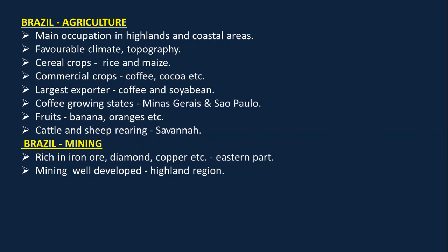The largest export of Brazil is coffee and soya bean. The major coffee growing states are Minas Gerais — this is asked at least eight times out of ten in map marking or in short-answer questions about commercial crops or major crops of Brazil. Fruits grown in Brazil are bananas, oranges, etc. Cattle and sheep rearing takes place in savannah grasslands.